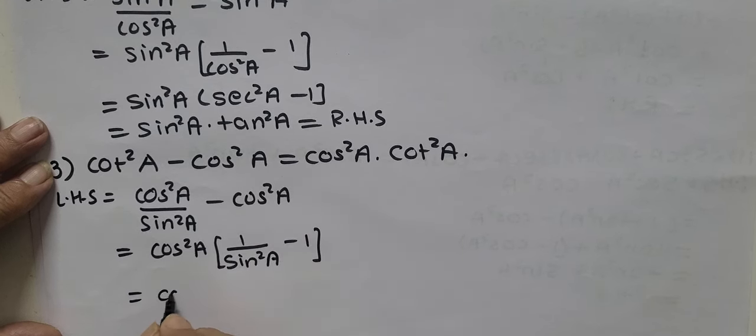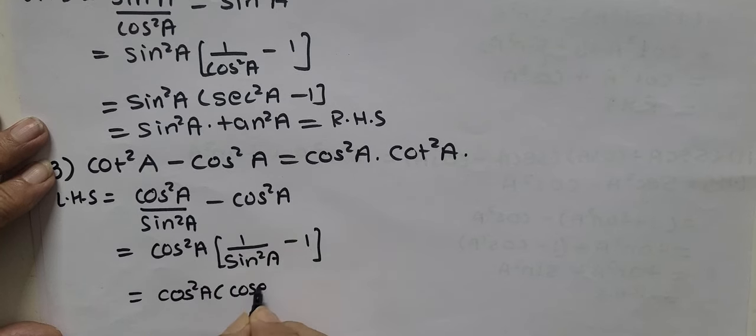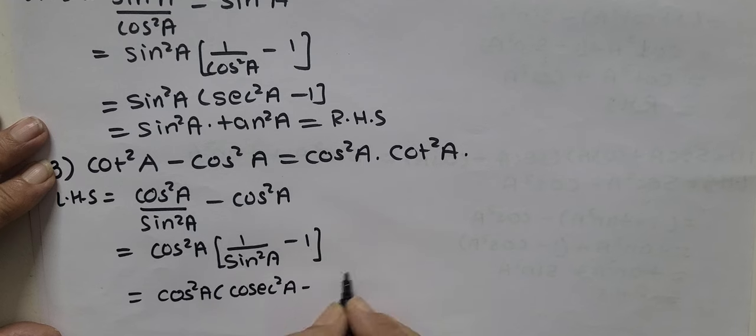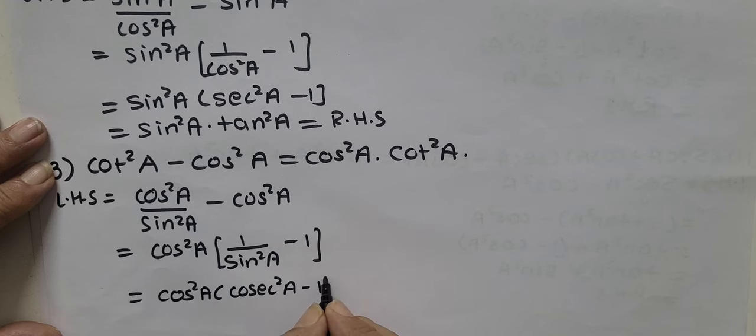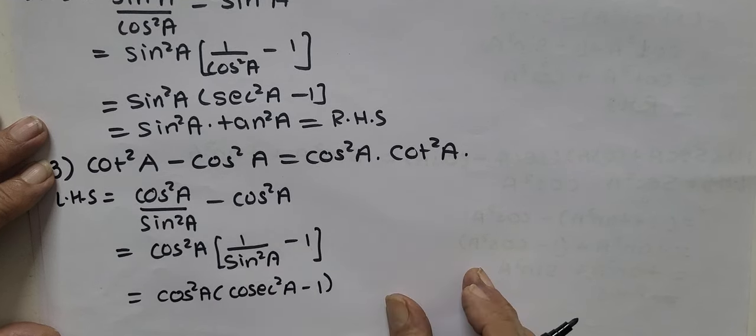That will give me cos square A. 1 upon sin square A is cosec square A minus 1.